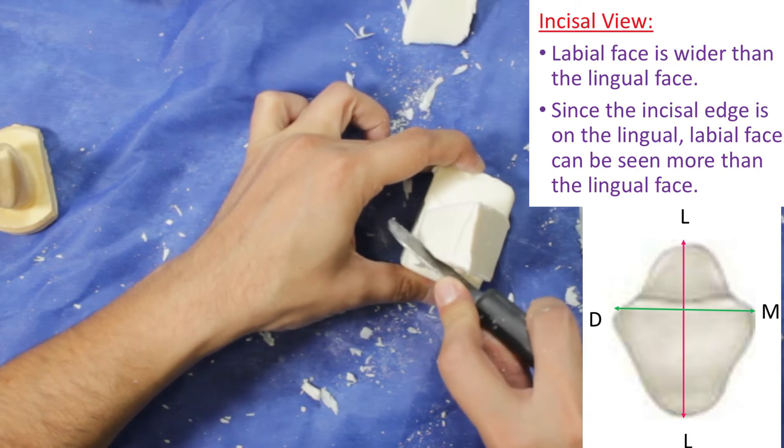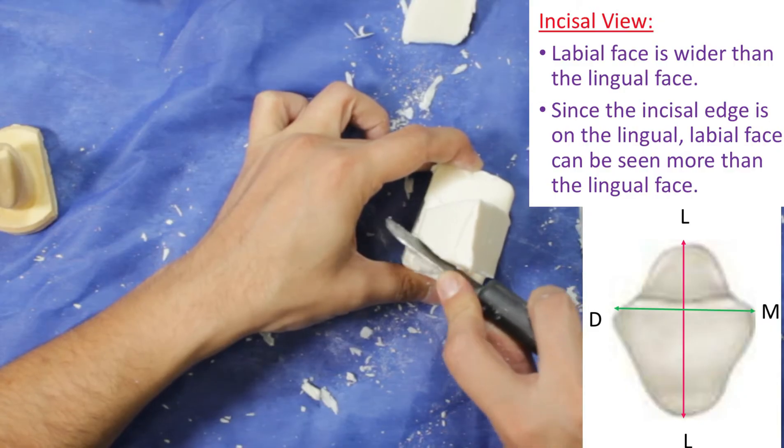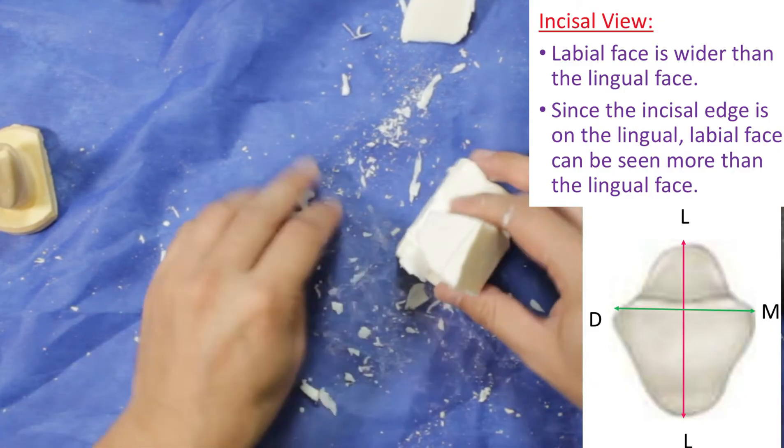Mandibular central incisor's labial face is wider than the lingual face. Since the incisal edge is on the lingual, the labial face can be seen more than the lingual face.